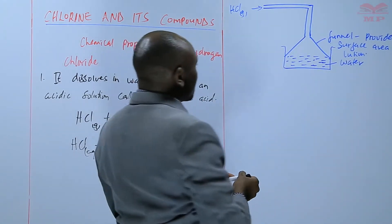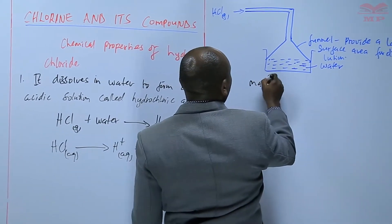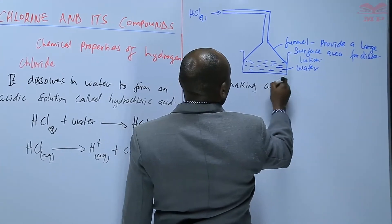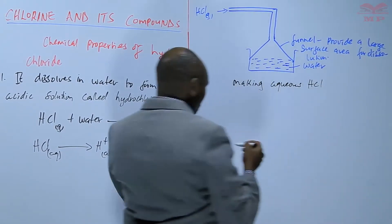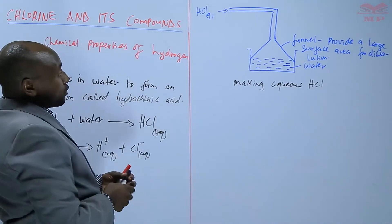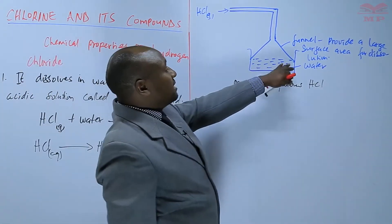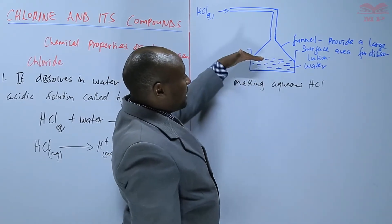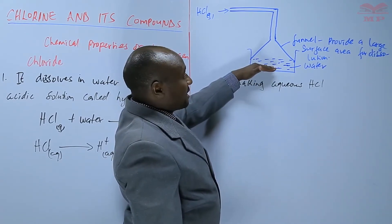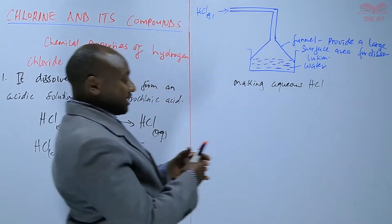So this is making aqueous HCl. So you need to dissolve the gas over a wide surface area of the water and the funnel should be placed just near the surface. And this one is to prevent the sucking back.